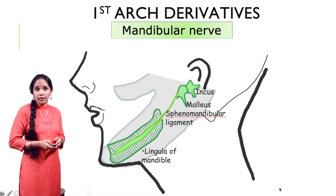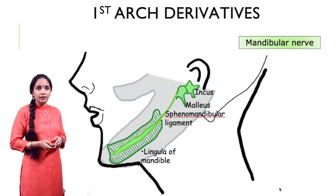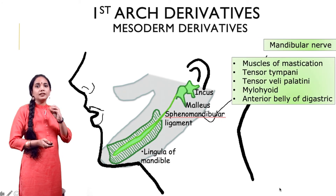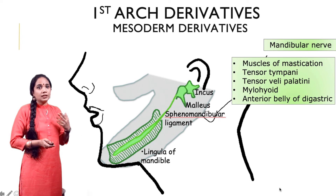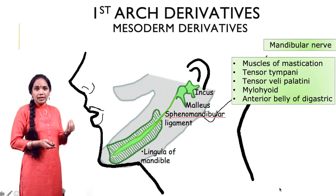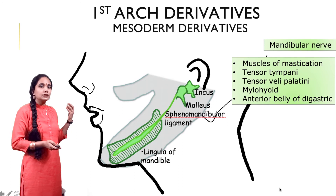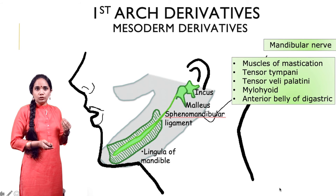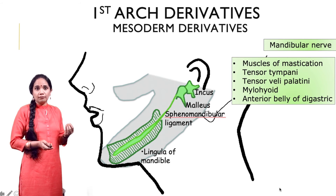The nerve of the first arch is called the mandibular nerve. All the muscles supplied by the mandibular nerve are derived from the first arch, and the converse is also true: muscles of mastication, tensor tympani and tensor veli palatini, mylohyoid muscle, and the anterior belly of the digastric. If you want to know which arch gives rise to a particular muscle, you just have to look at their nerve supply.